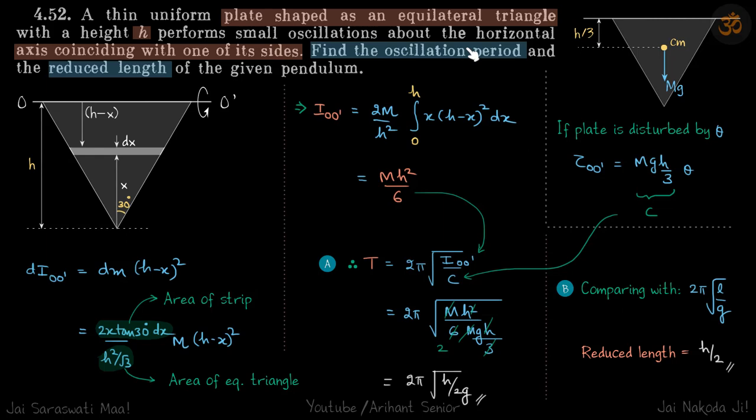So we'll see that. So first let's find the oscillation period. So we know oscillation period for a compound pendulum is 2π√(I about axis / c). c we will get from the torque here, and I about O' we have to calculate.